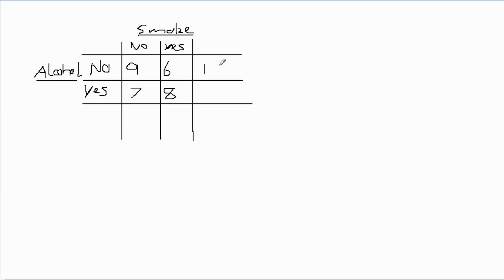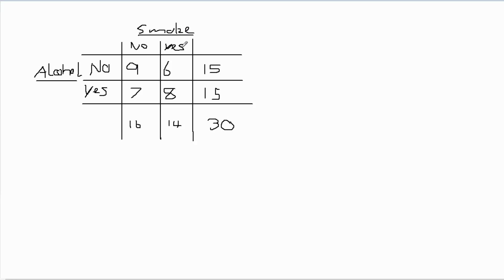We have 15 people who don't drink alcohol and 15 who do, giving a total of 30 individuals. Checking the columns: 16 people don't smoke and 14 do, both totalling 30. The data is exhaustive because no member was left out, and mutually exclusive because each member is assigned to only one category. Those assumptions have been met.